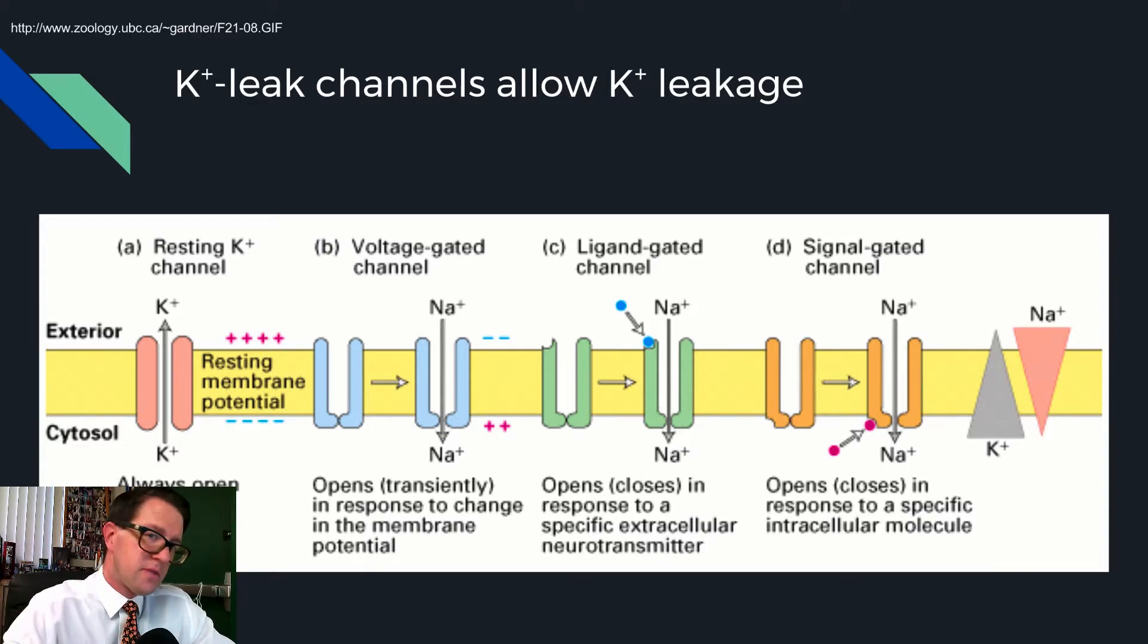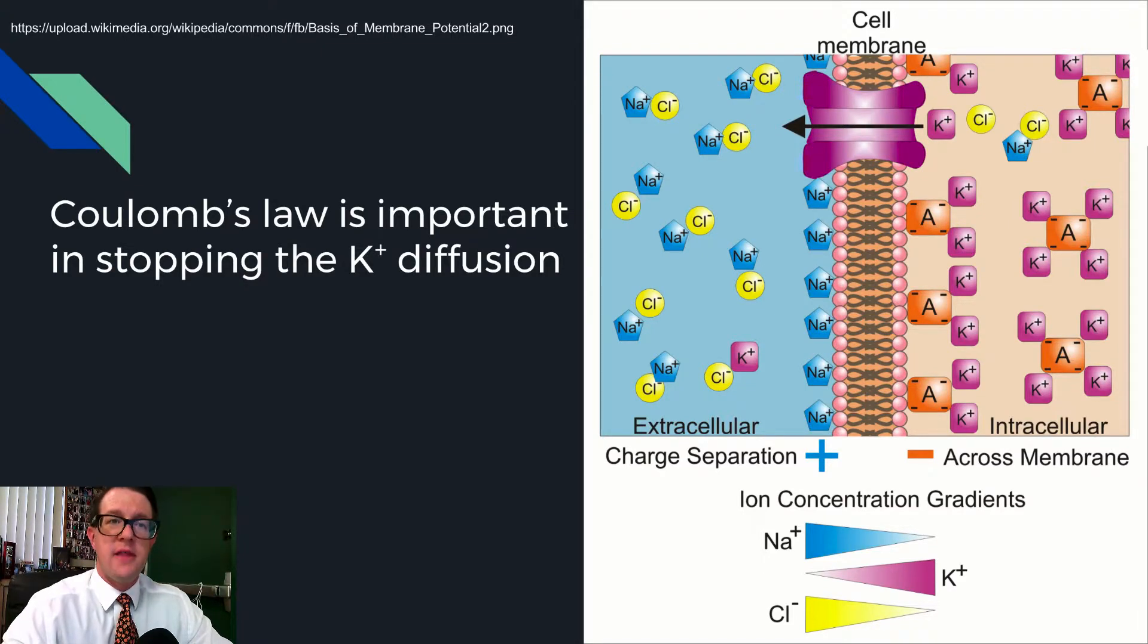There's a catch: every time a potassium ion leaves, there's an unpaired negative charge. There's a rule that opposites attract, called Coulomb's Law. The result is that potassium ions become so attracted to the inside of the cell that they will no longer leak, because the attraction to that negative charge prevents the potassium ion from leaving.